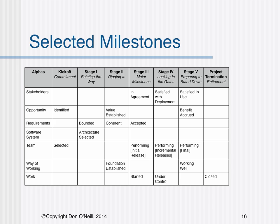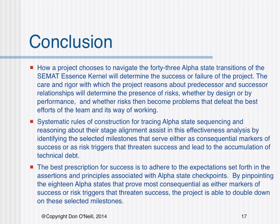Certain selected milestone states serve as indicators of project success. Of the 43 state transitions in the tables, 19 selected milestones provide a critical insight into the health and status of the project. When completion of these states is neglected or postponed, the outcome of the project is placed at risk. The table presents the 18 selected milestone states critical to success on a project. How a project chooses to navigate the 43 alpha state transitions of the CMAT Essence kernel will determine the success or failure of the project. The care and rigor with which the project reasons about predecessor and successor relationships will determine the presence of risks — whether by design or by performance.